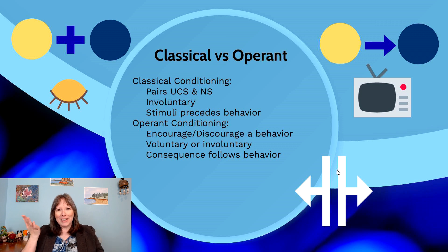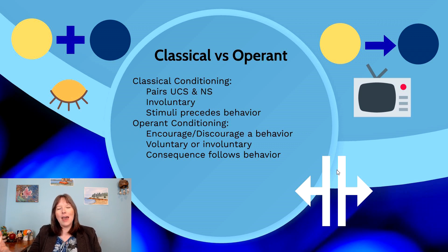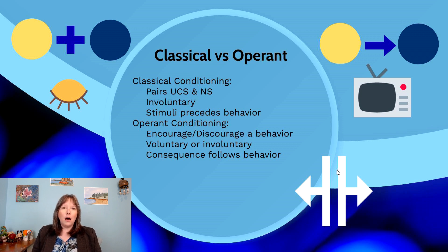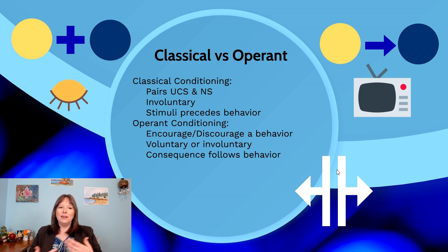You might be wondering what the difference is between classical and operant conditioning. In classical conditioning we pair the unconditioned stimulus with the neutral stimulus before the behavior — before the reflex — and this is often very involuntary. Operant conditioning, on the other hand, involves consequences that encourage or discourage a behavior and follow the behavior rather than coming before it. It could be involuntary but is also frequently voluntary — more so than classical conditioning.